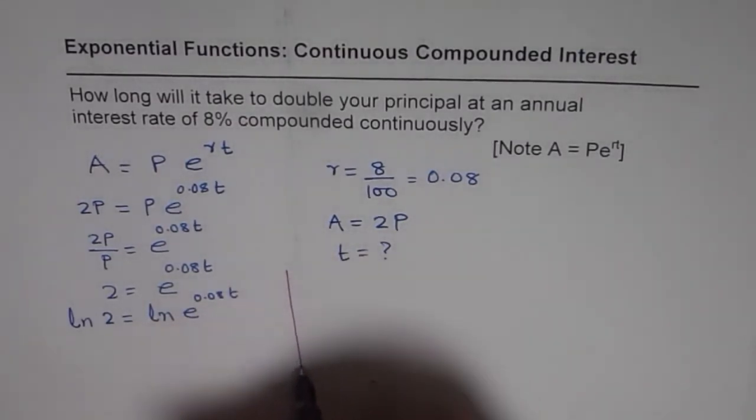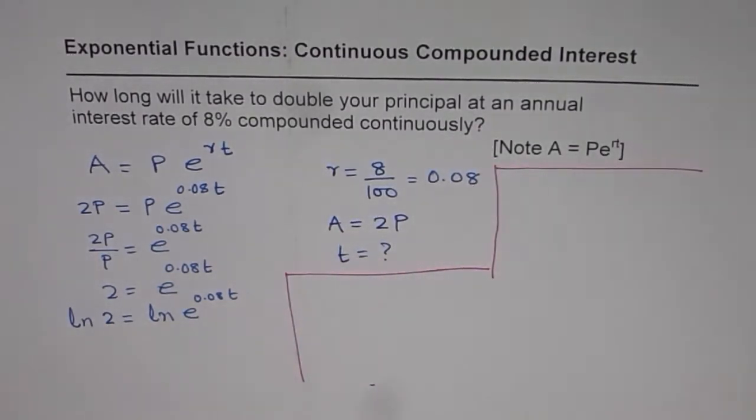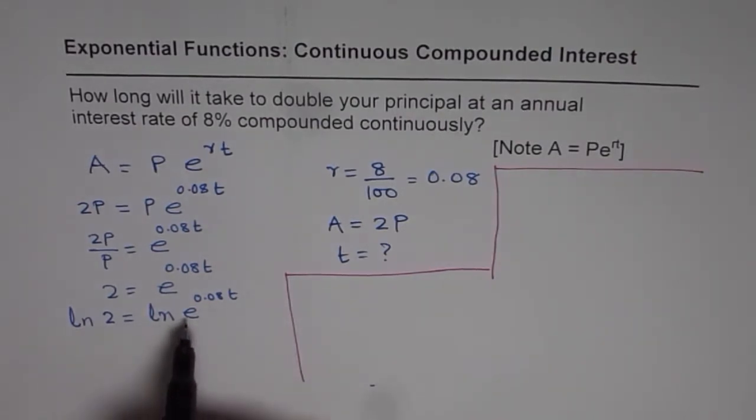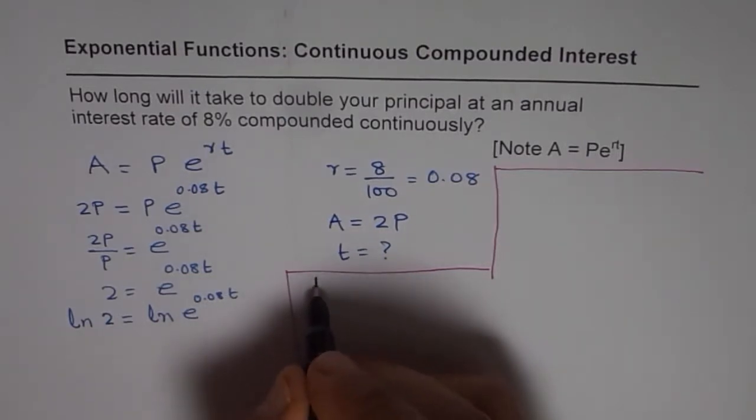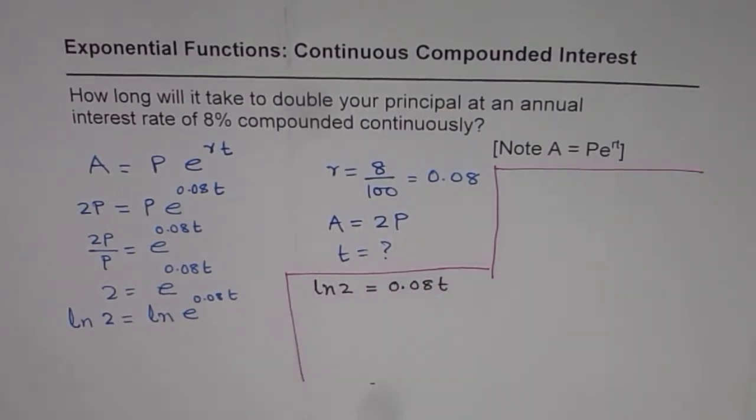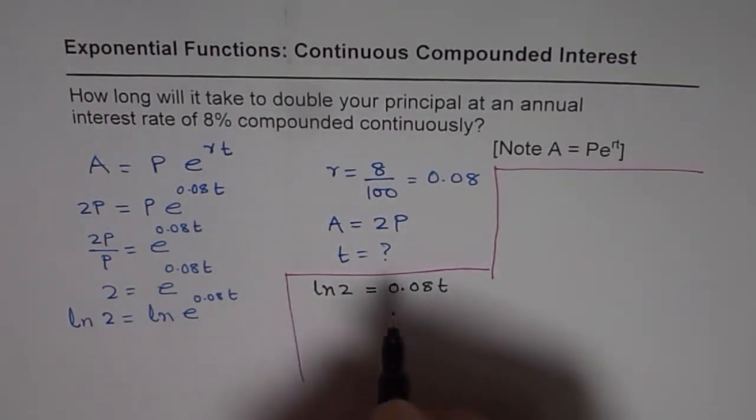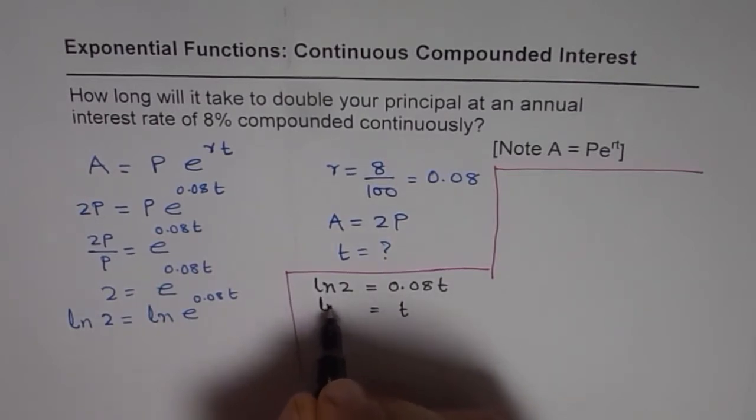So it really means ln of 2 equals ln e to the power of 0.08t. So ln of e to the power of 0.08t is only 0.08t. So it could be written as ln 2 equals 0.08t, since the base is e. From here, we can find t as equals ln 2 divided by 0.08.